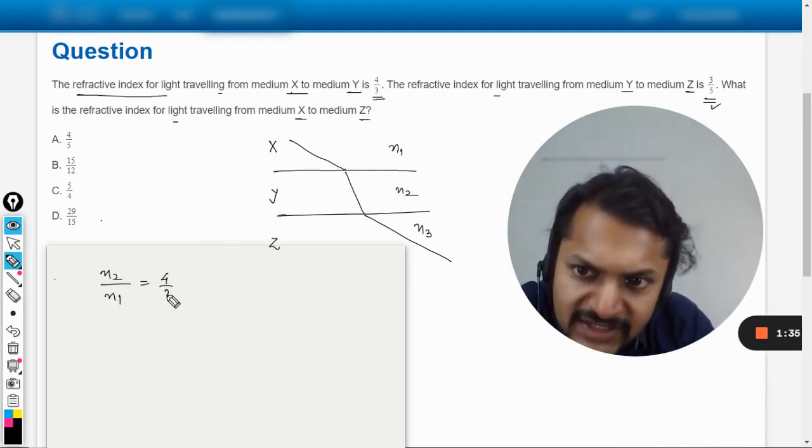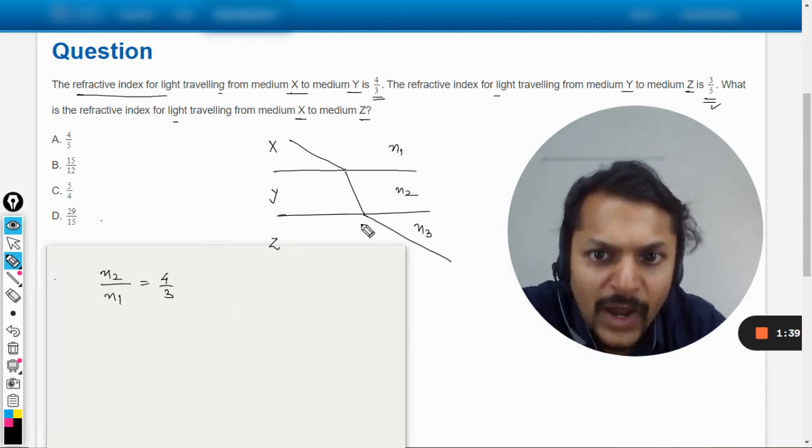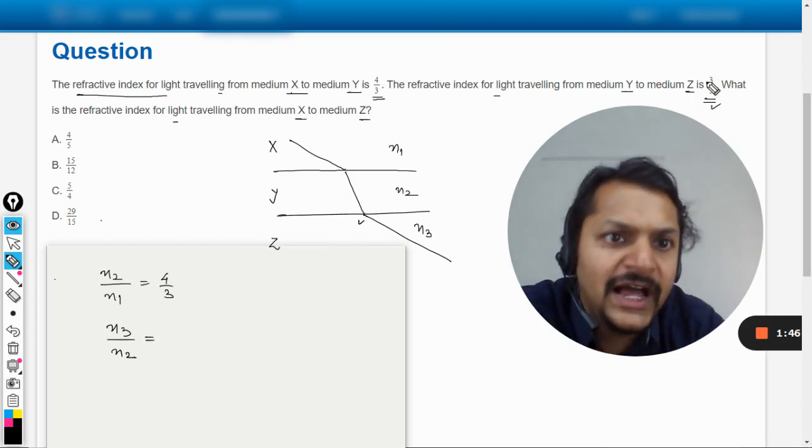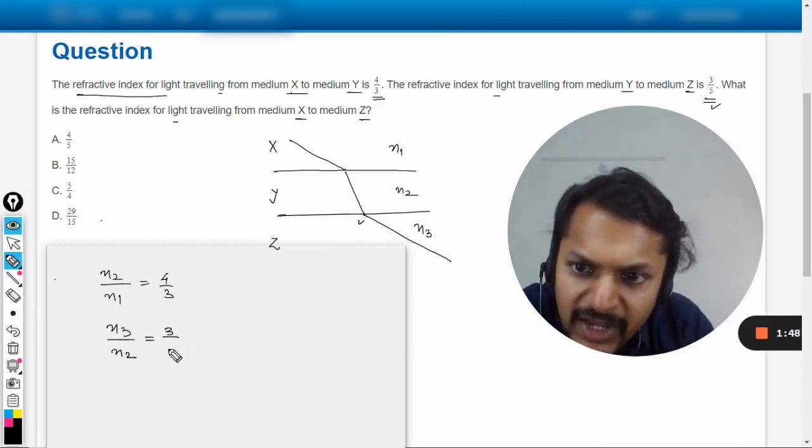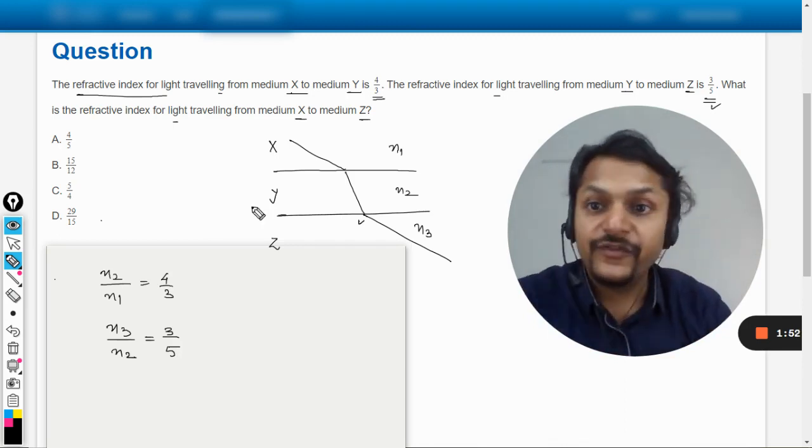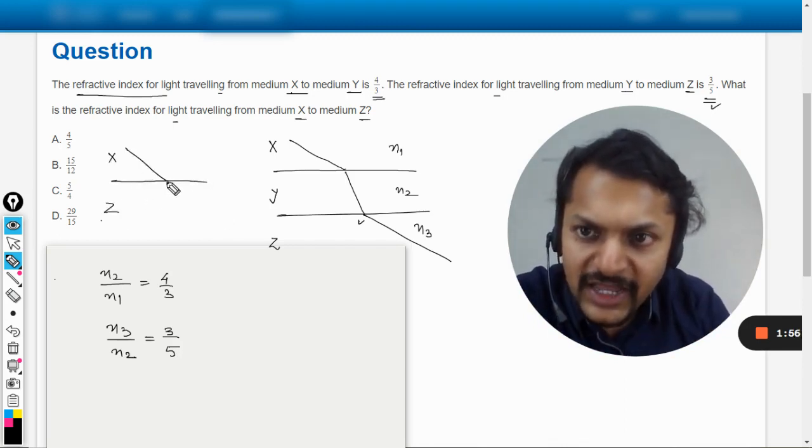Now when it is passing from Y to Z, that is at this junction, the refractive index will be n3 divided by n2, and it will become 3 by 5. And what do we want? We want another thing. Let us say this is X and this is Z, so the light is directly passing through this.